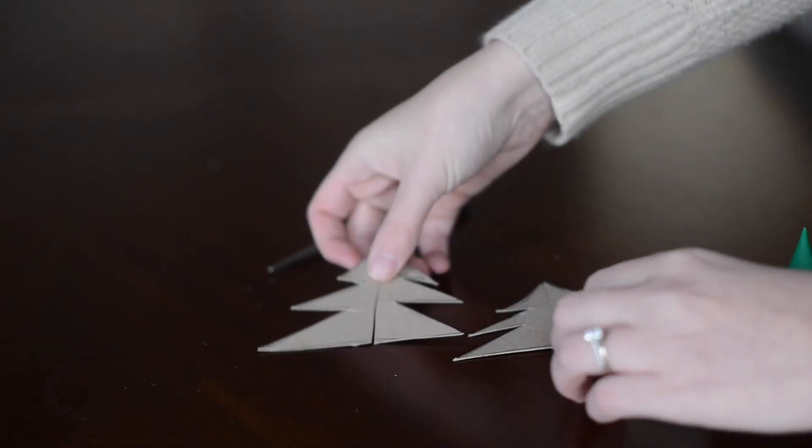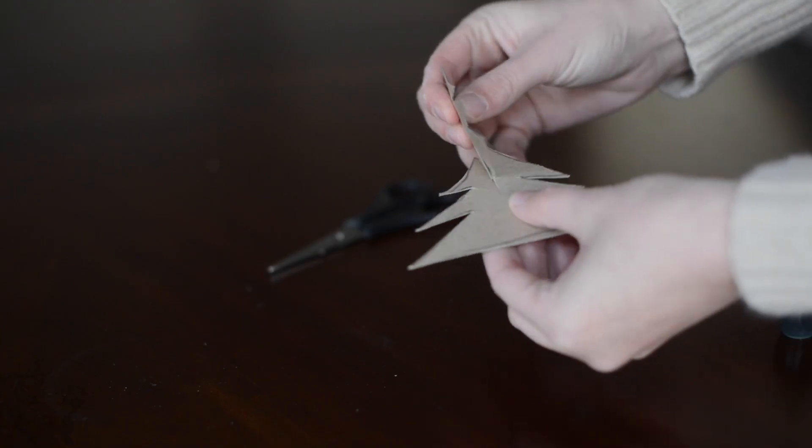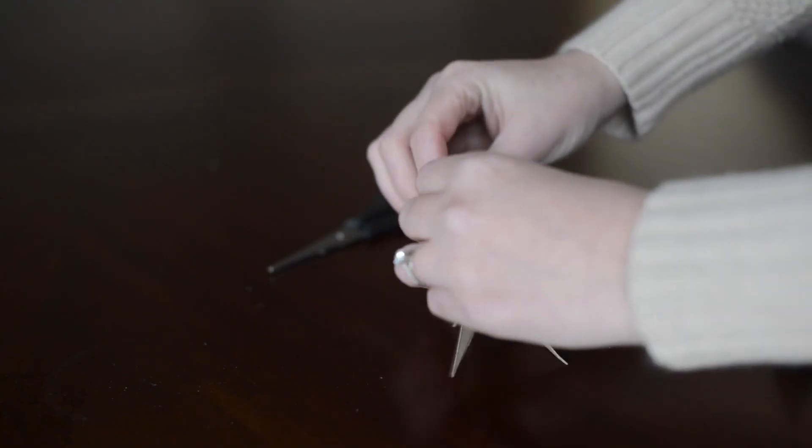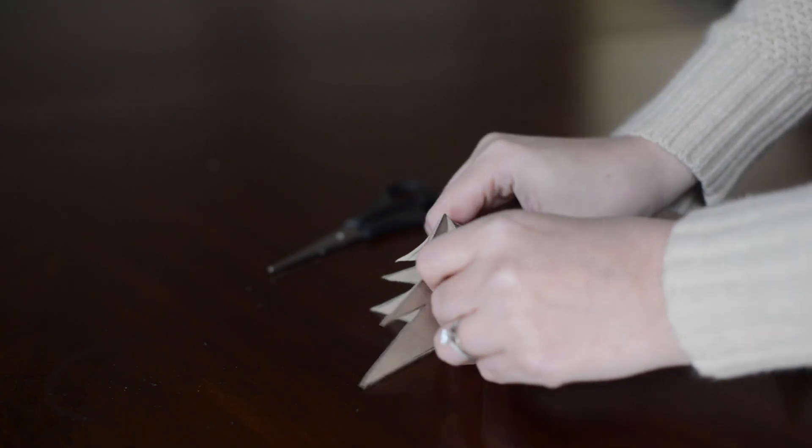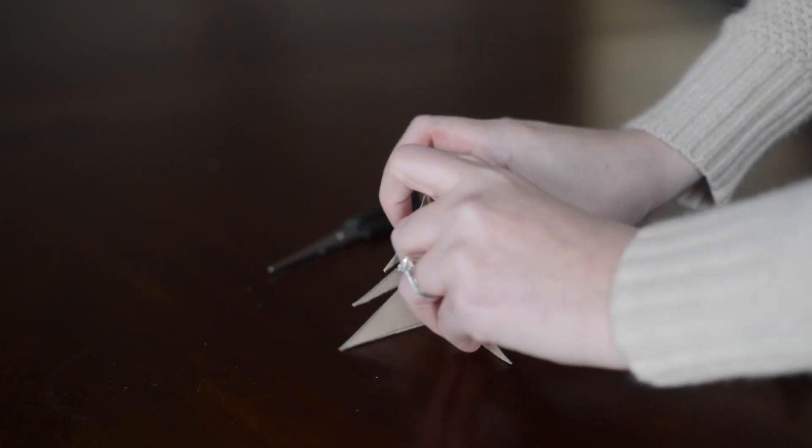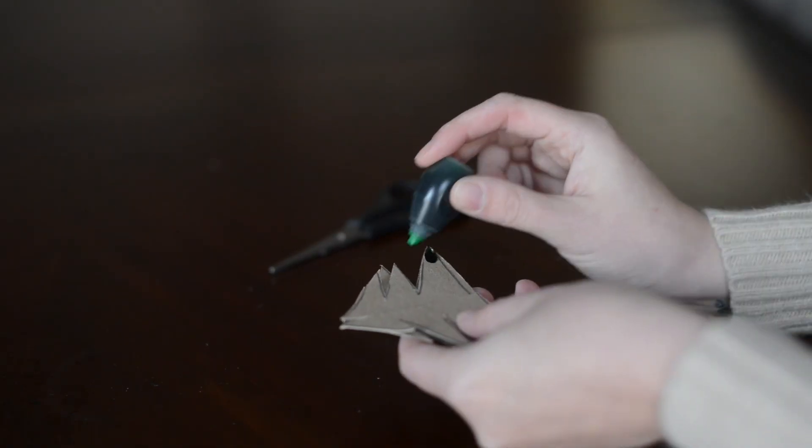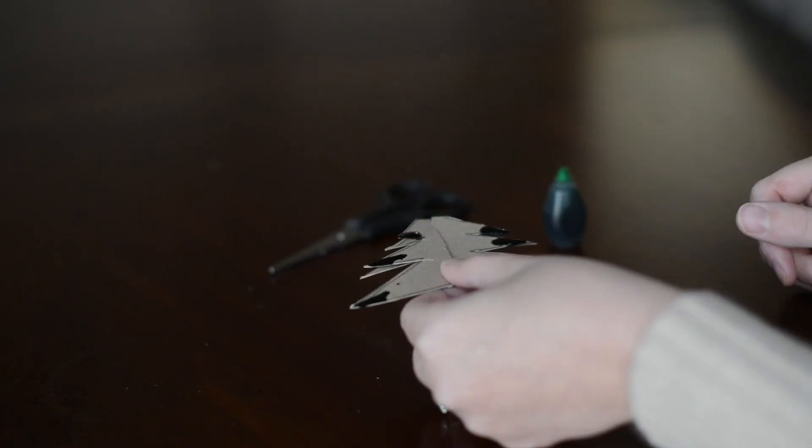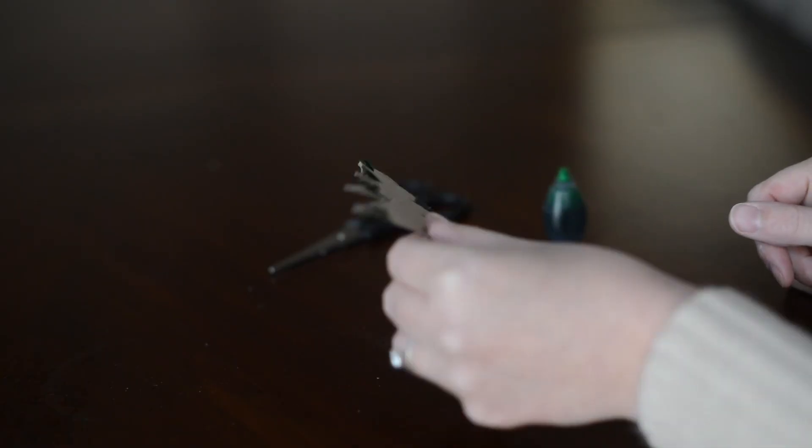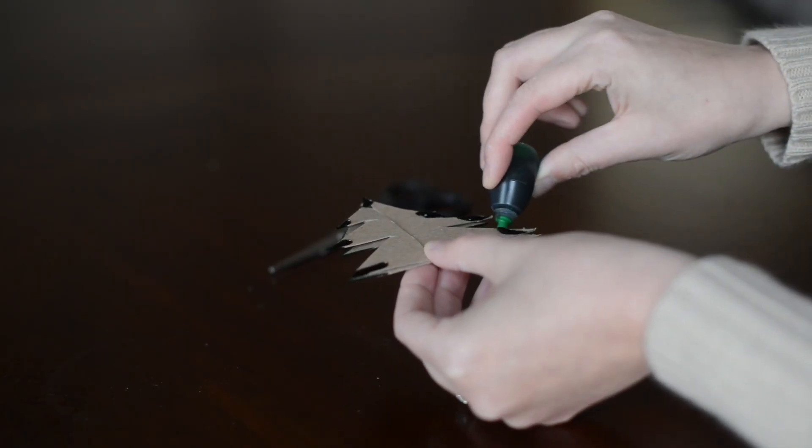Then you want to cut your tree shape out of the cardboard. And cut a slit in the bottom of one and the top of the other so you can make a 3D tree. And then I added food coloring to the ends of my tree.